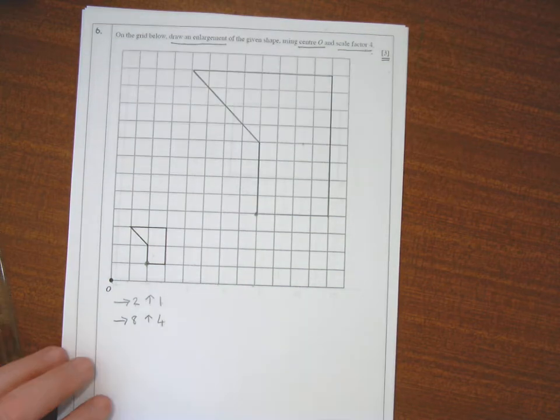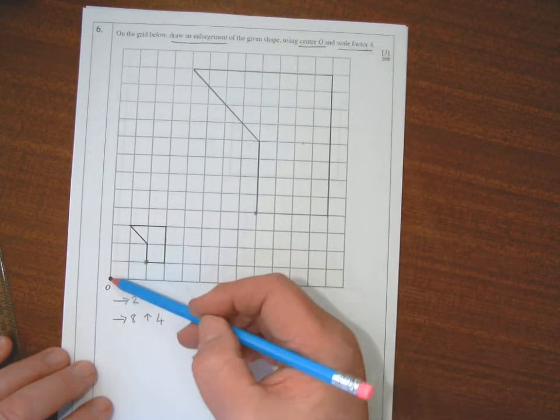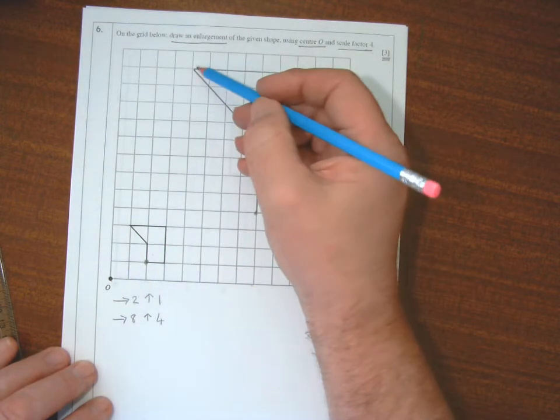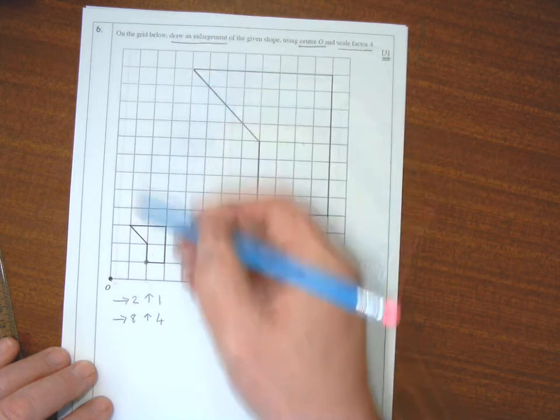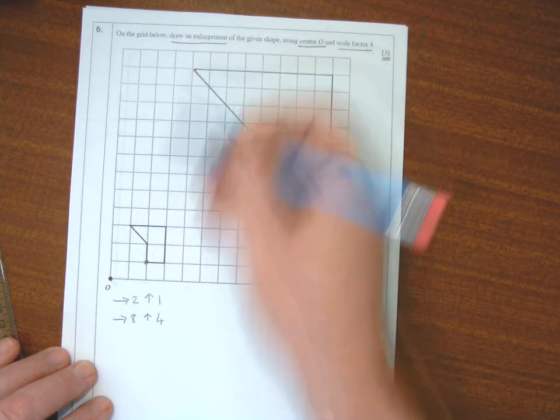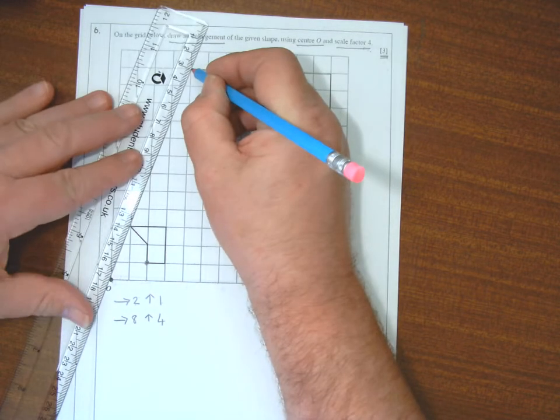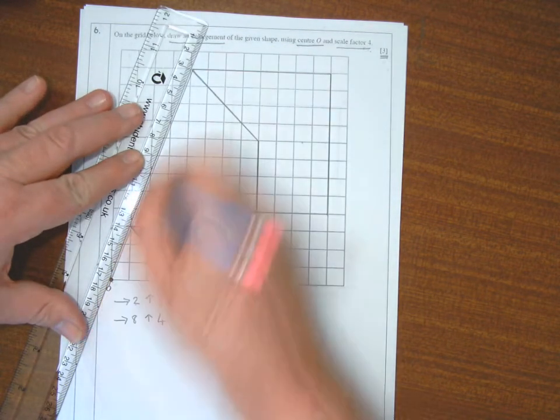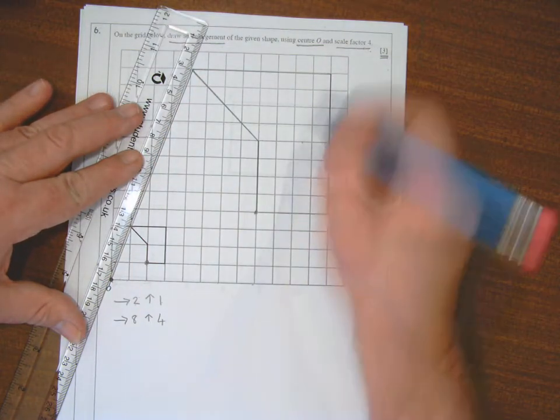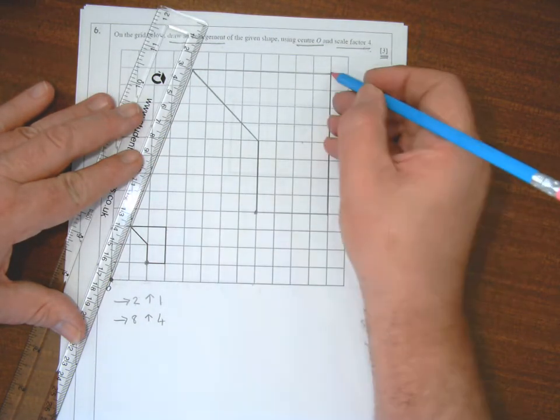And then what is the center? Well, if I join these points from the big shape and the small shape, join them together and go through like that...